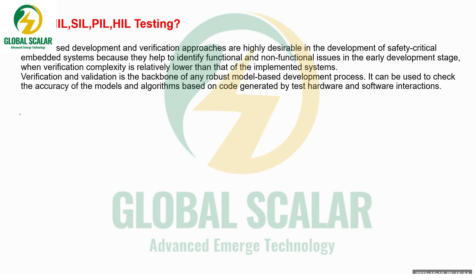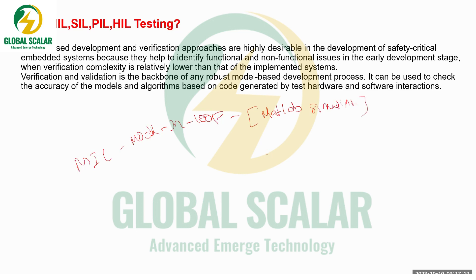In embedded systems there are four phases. The first is MIL — Model in Loop. Model in Loop is specifically related to the plant model, designed with the help of MATLAB Simulink. Instead of physical components, we simulate using virtual components. It is not a real component — it is a simulation.